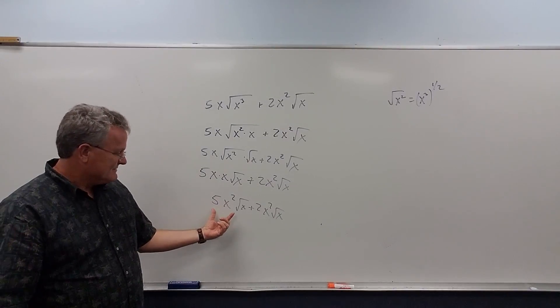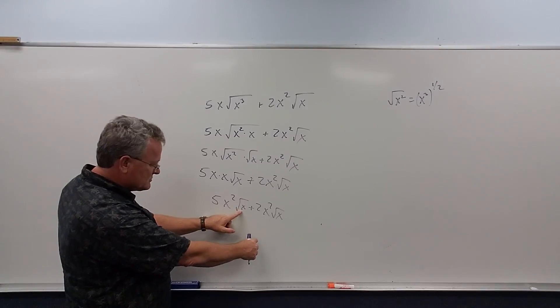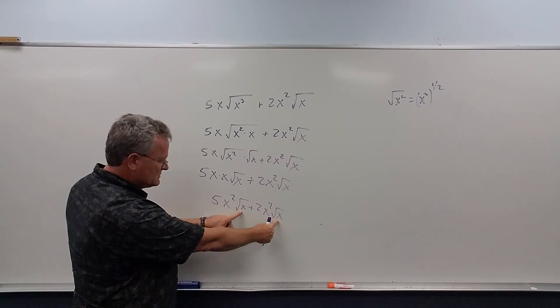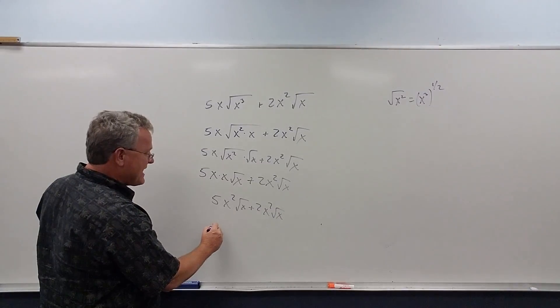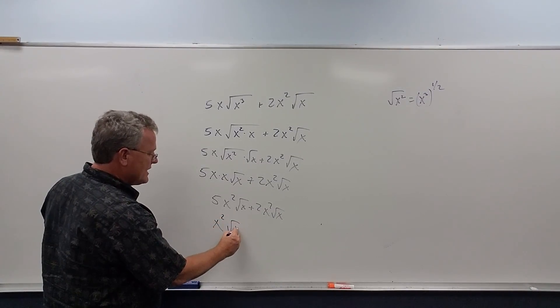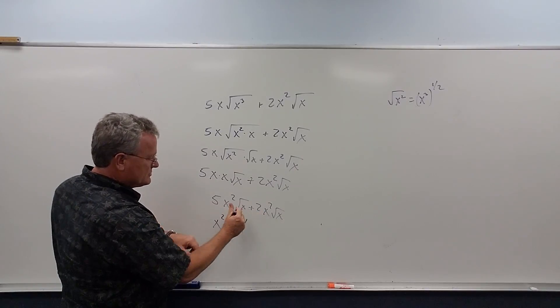To add these, notice there's an x square root of x in both of these. So you could think of this as factoring out an x square root of x. And when you factor that out from both terms, you're literally taking it out,